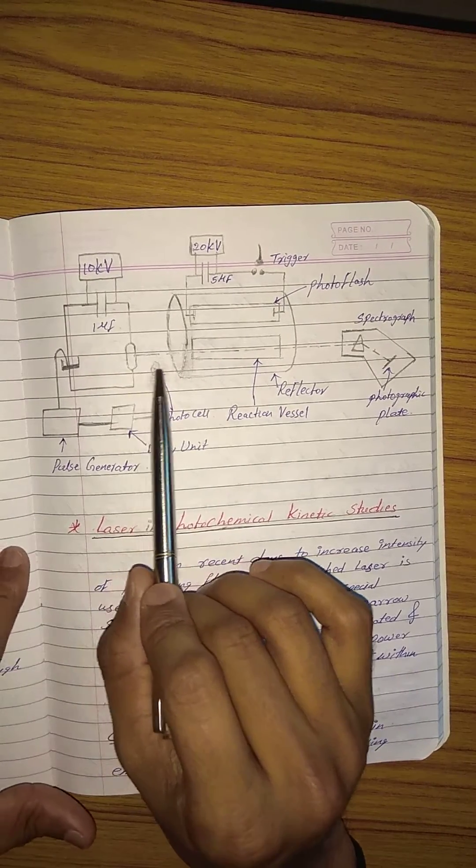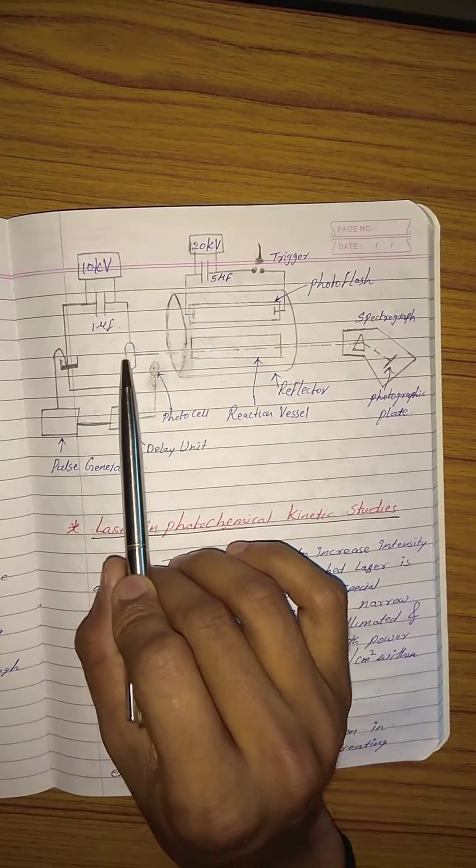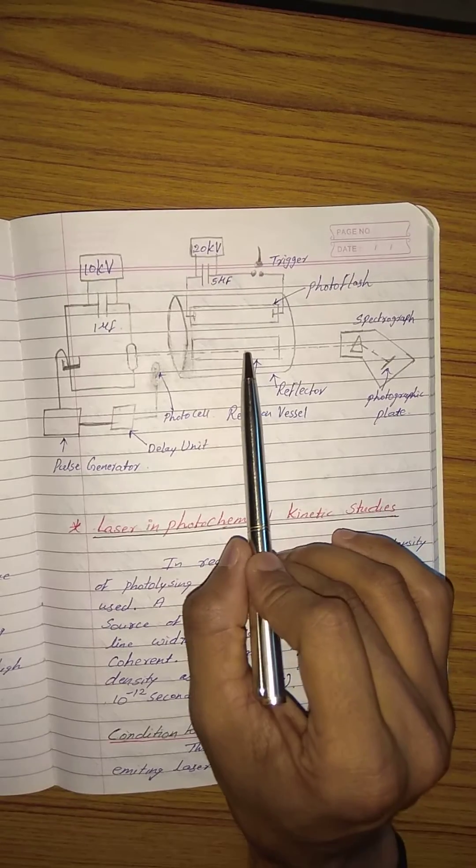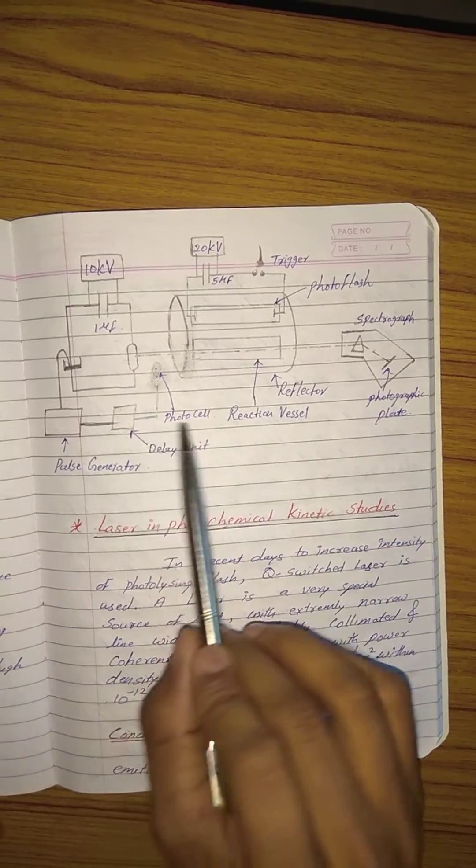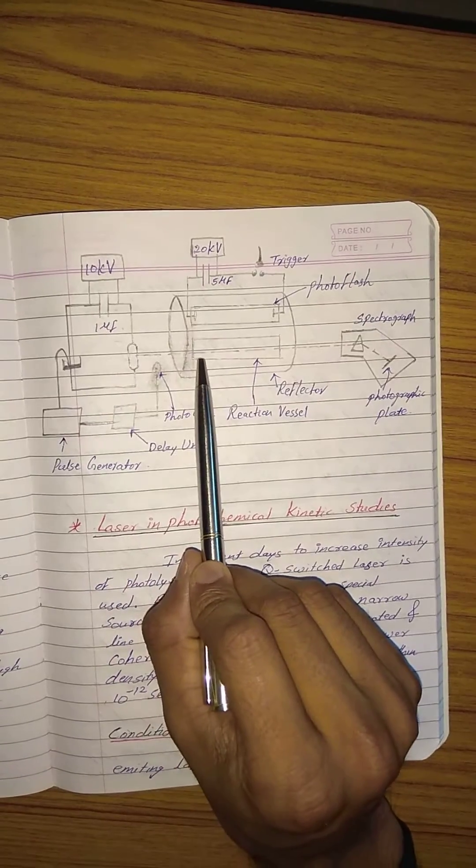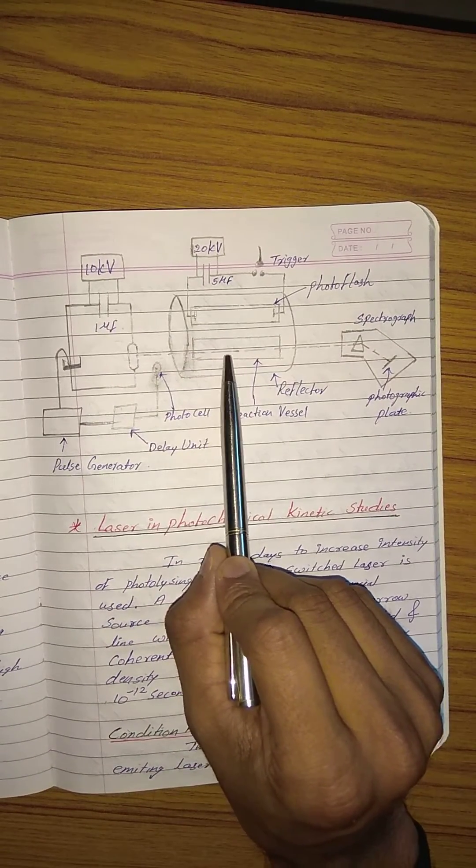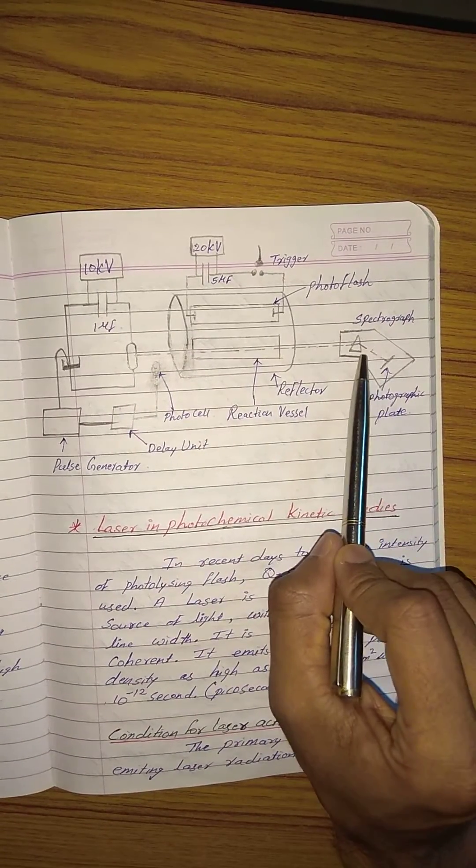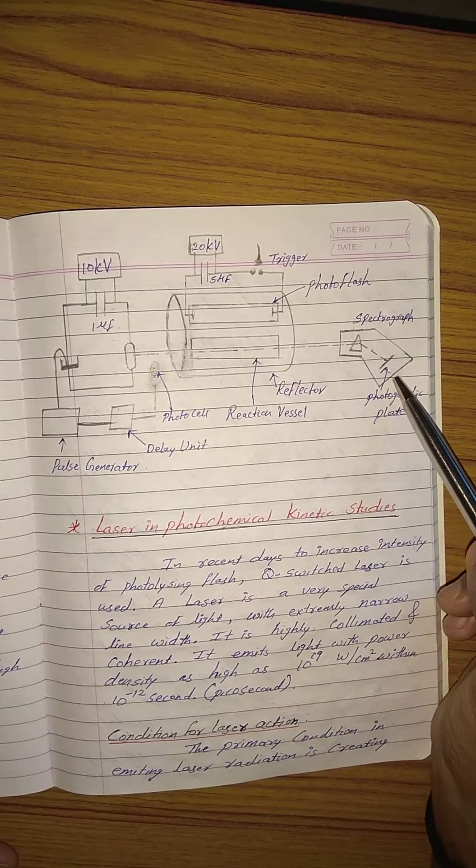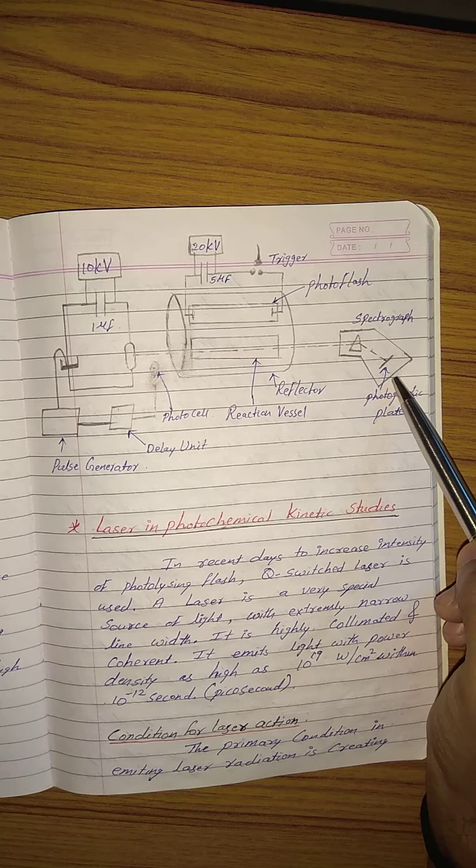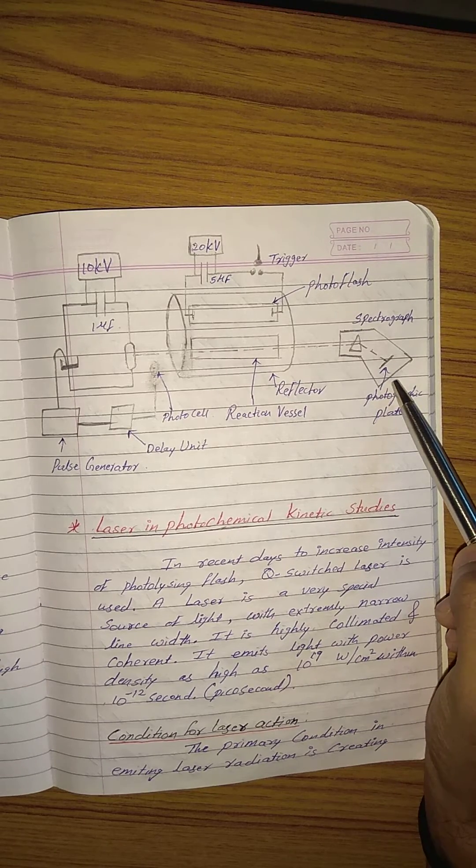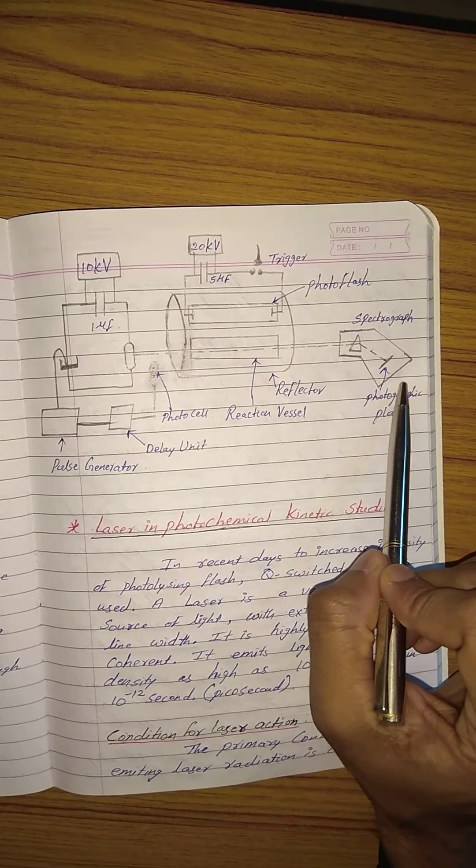The monitoring flash is directed perpendicular to the photo flash. The light from the monitoring flash is passed through the reaction cell and then through a spectrograph. The absorption spectra obtained using the spectrograph gives the concentration of intermediate formed, and using this we can determine the quantity of intermediate formed.